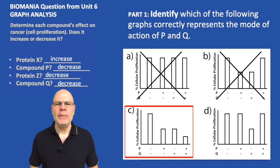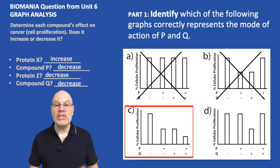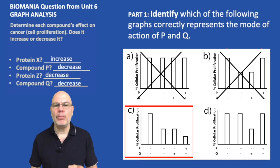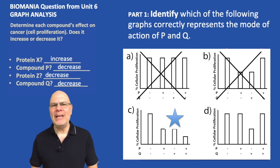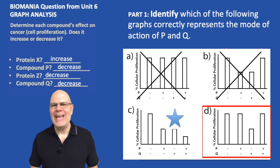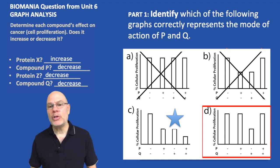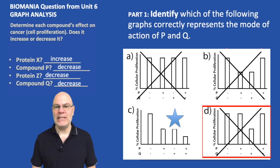Now let's look at Graph C. The leftmost bar is the control. The second bar shows when P is present and Q is absent, cell proliferation goes down. The third bar shows when Q is present and P is absent, cell proliferation goes down. And finally, the rightmost bar shows when both are present, cellular proliferation goes down the most. That looks like the winner — that makes sense. Checking Graph D: it doesn't make sense because when P is present there's no effect compared to control, and when both substances are present there's also no effect. We're knocking out Graph D. So Graph C is correct.